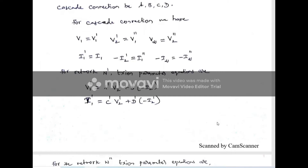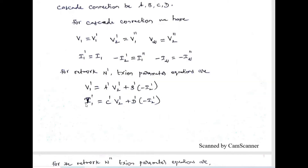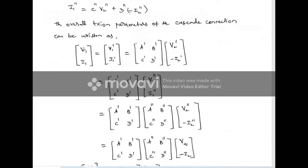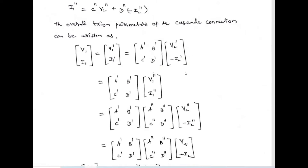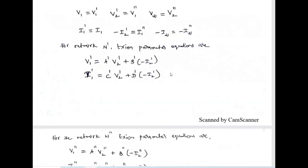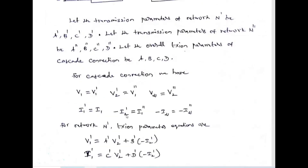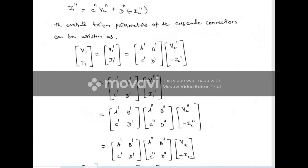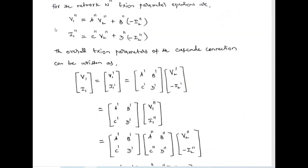To find the overall transmission parameter, take the first two equations. In these equations, V1' is V1 and I1' is I1, so replace the left side terms with V1 and I1. Write the two equations in matrix form: V1 and I1 can be written as A' B' C' D' multiplied by V2' and minus I2'. Instead of V2' and minus I2', substitute V1'' and I1'' respectively. The values of V1'' and I1'' come from the second network's transmission parameter equations.